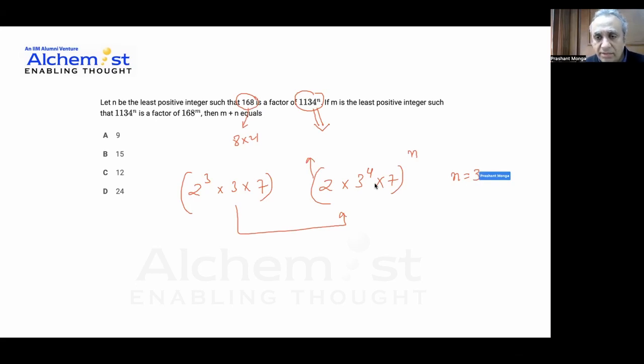So this number becomes this much, making this number as 2 to power 3, 3 to power 12 into 7 to power 3. Now for this number to be a factor of this number's power m.